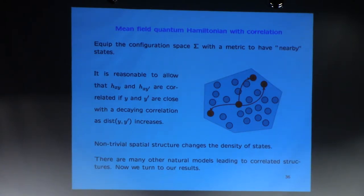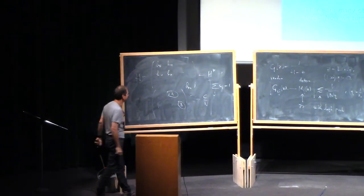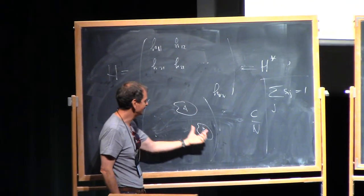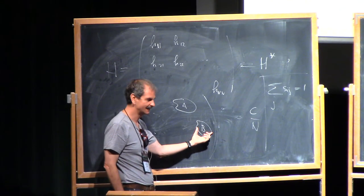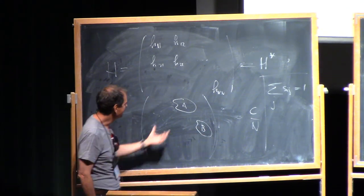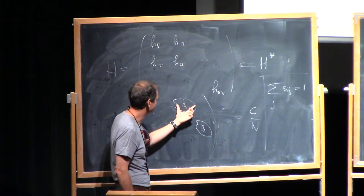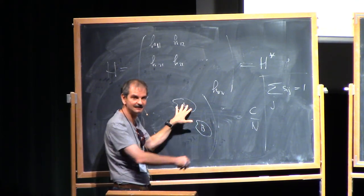The type of correlation is as follows: if you have some set A and some set B within the matrix, then the matrix elements supported around A and the matrix elements supported around B are roughly independent. In the Wigner-type case they are completely independent, but in the correlated case, we assume some kind of correlation decay — the covariance between elements near A and elements near B decays with the distance between the two sets.